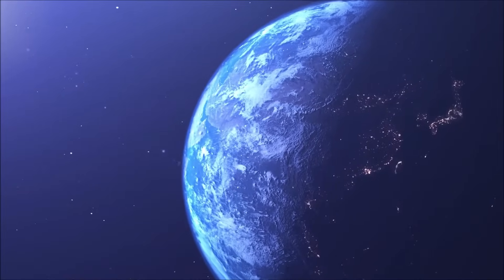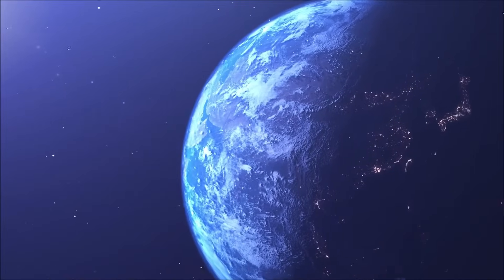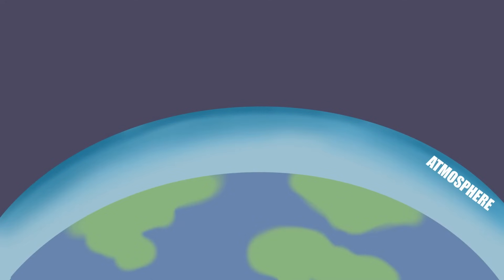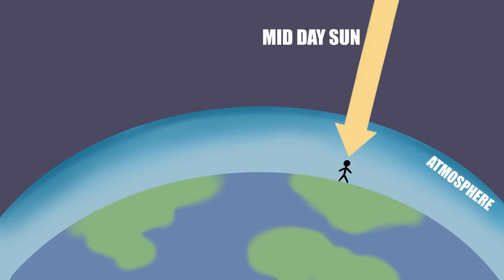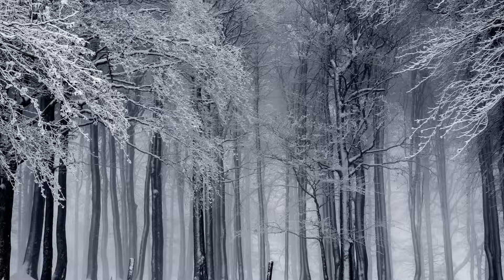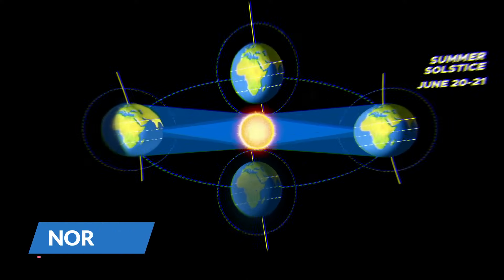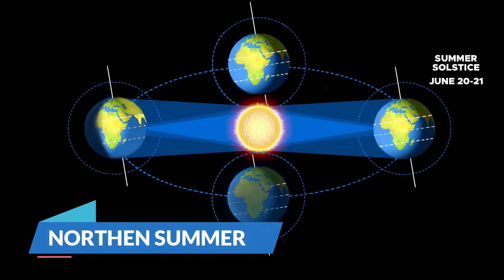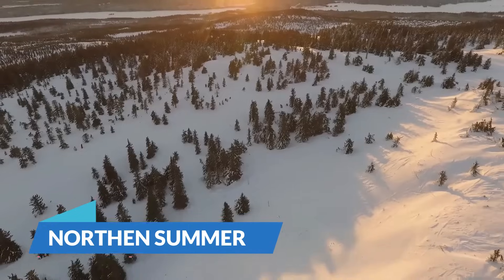When the earth's northern hemisphere is tilted towards the sun, it gets more solar radiation than the south. As vertical rays travel less distance through the earth's atmosphere, they are scattered less, and the hemisphere facing the sun receives more heat energy. This leads to summer in the northern hemisphere and winter in the southern hemisphere.